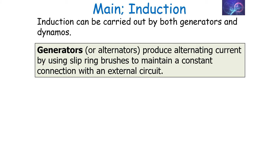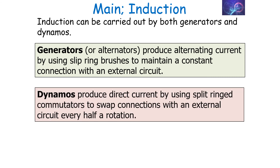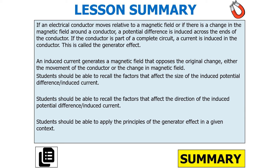Induction can be carried out by both alternators and dynamos. Generators or alternators produce alternating current by using slip ring brushes to maintain a constant connection with an external circuit. Dynamos produce direct current by using split ring commutators to swap the connections with an external circuit every half a rotation. Both can use induction to produce their potential difference, which turns into a current when part of a complete circuit. If an electrical conductor moves relative to a magnetic field, or there's a change in magnetic field around a conductor, a potential difference is induced across the ends of the conductor. If the conductor is part of a complete circuit, a current is induced — this is called the generator effect. An induced current generates a magnetic field that opposes the original change.